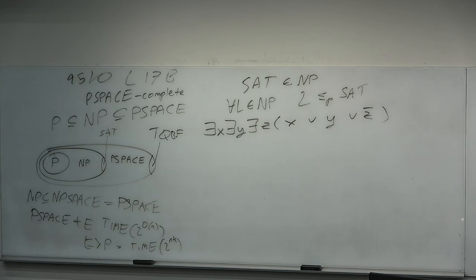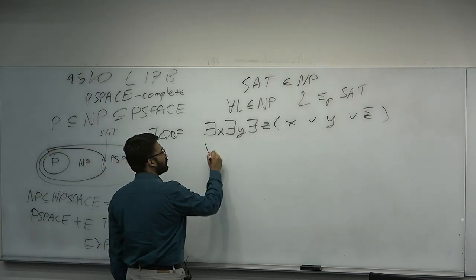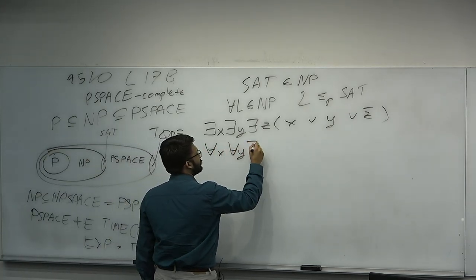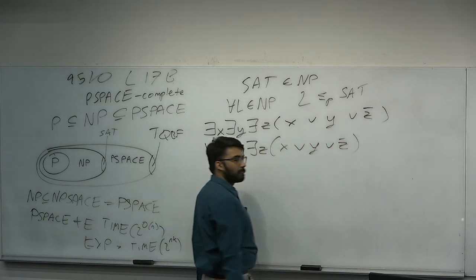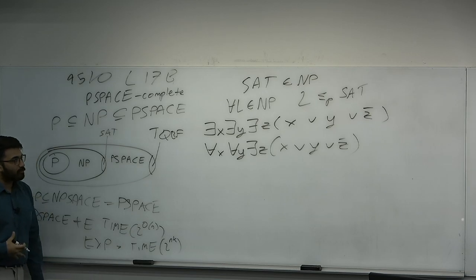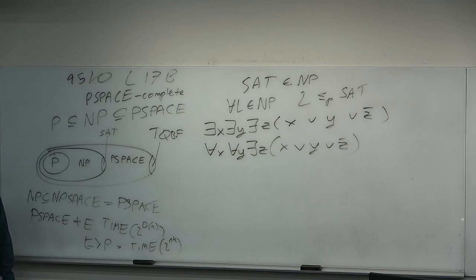If we write the quantifiers explicitly, the next question is: what about the universal quantifier? Consider 'for all X, for all Y, exists C, X or Y or C.' Quantified Boolean formulas allow us to replace some existential quantifiers with universal ones. That's all TQBF is — simply the generalization of SAT that allows universal quantification over its variables.